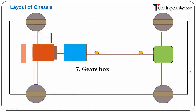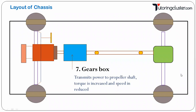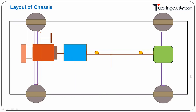Now the gearbox: it receives power from the engine through the clutch and transmits the power to the propeller shaft. The gearbox also produces different speed ranges for the vehicle — in the gearbox, torque is increased and speed can be reduced. So the function of the gearbox is to transmit power to the propeller shaft while varying torque and speed.